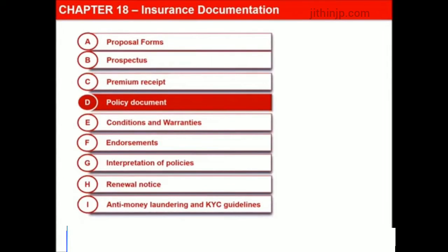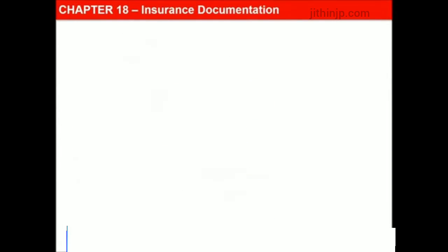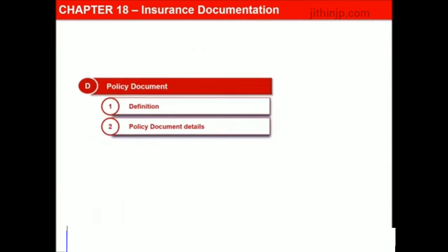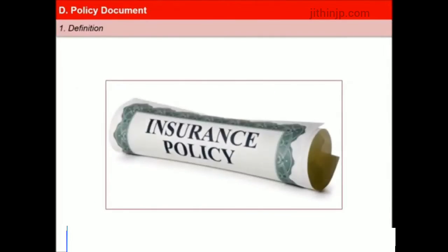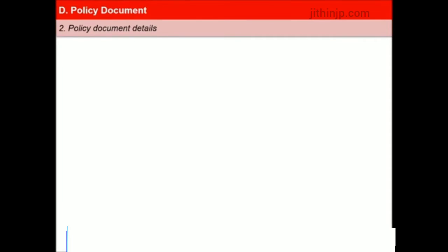The policy is a formal document which provides evidence of the contract of insurance. This document has to be stamped in accordance with the provisions of the Indian Stamp Act 1899. IRDAI regulations for protecting policyholders' interest specify that a health insurance policy should contain the name and address of the insured and any other person having insurable interest in the subject matter.